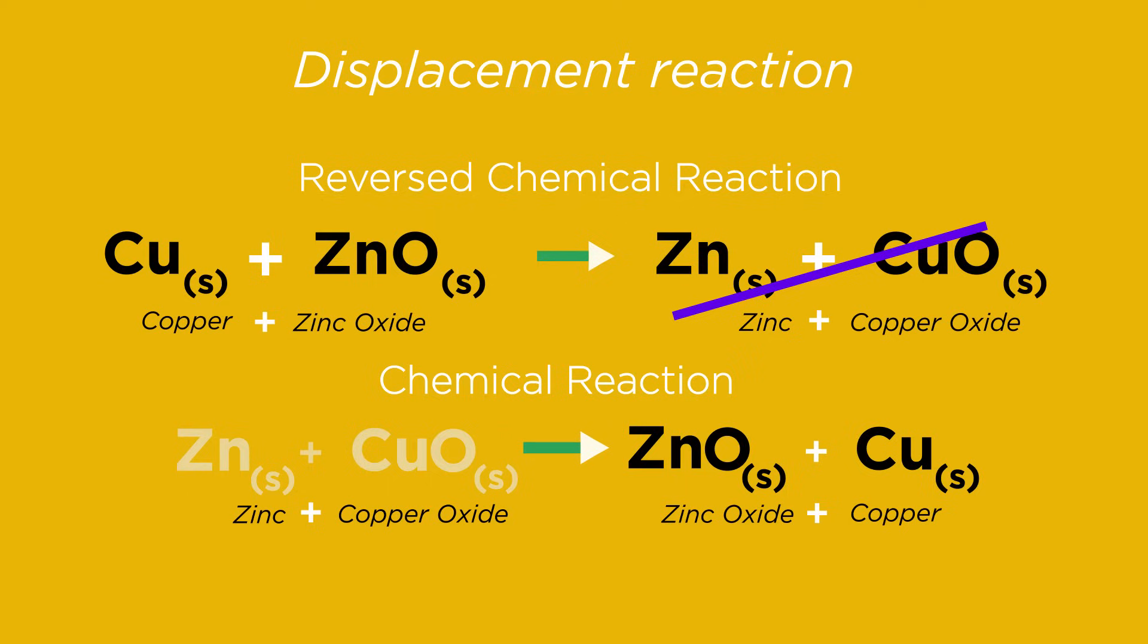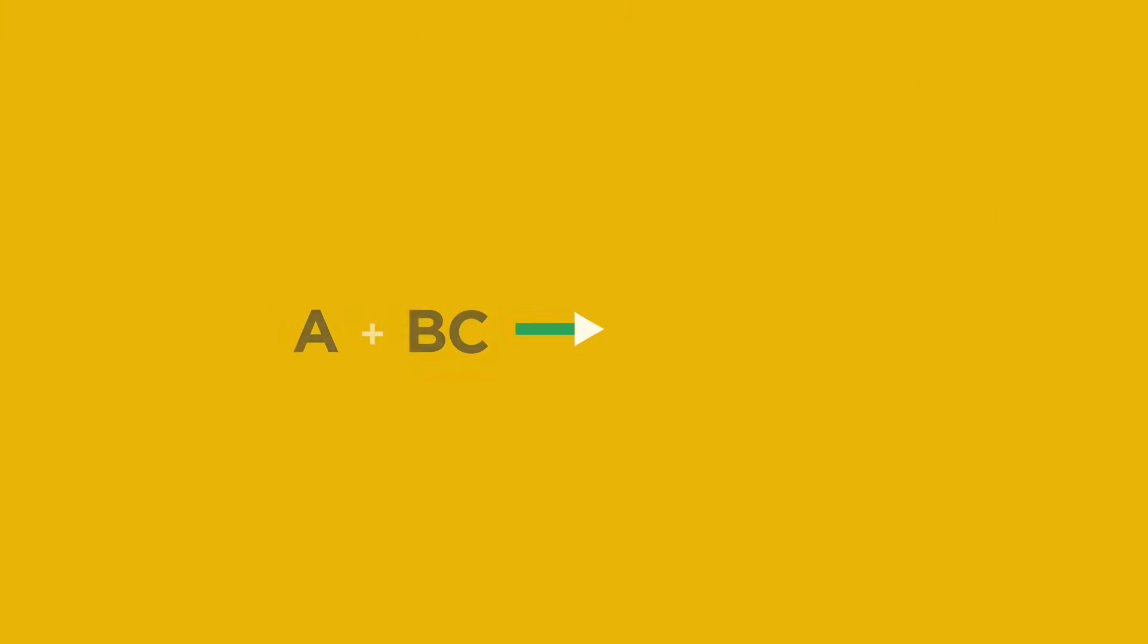This shows how we can use the reactivity series to predict if a reaction will go, and if it does then we can name the product by switching the names of the metals around.